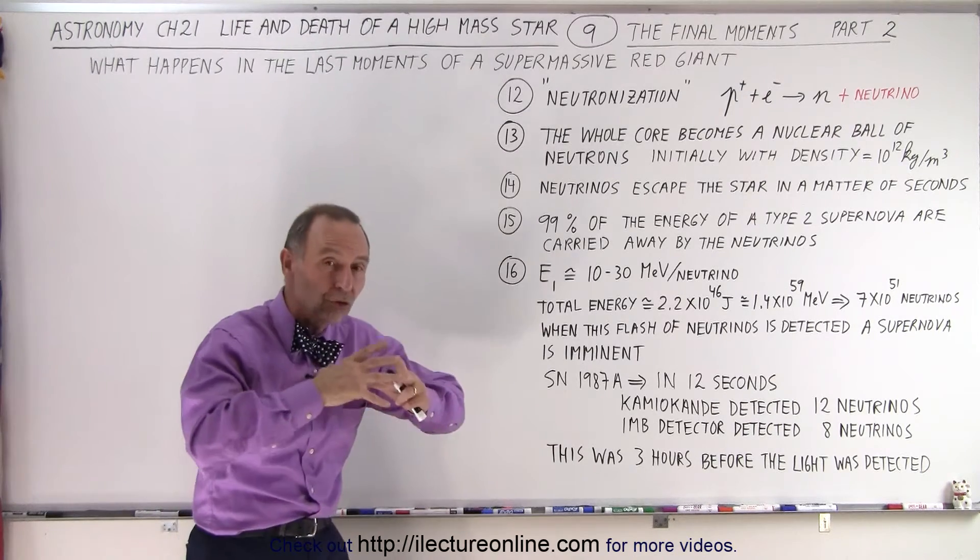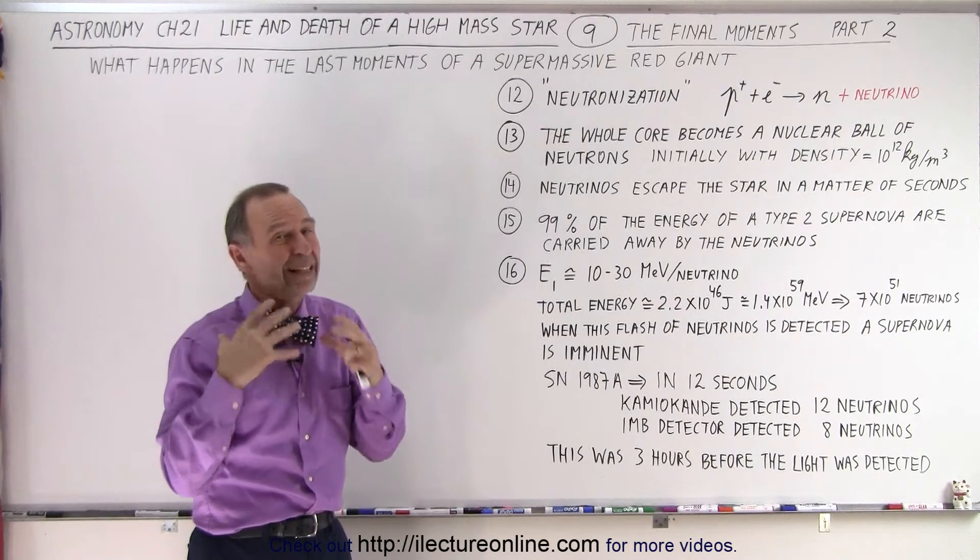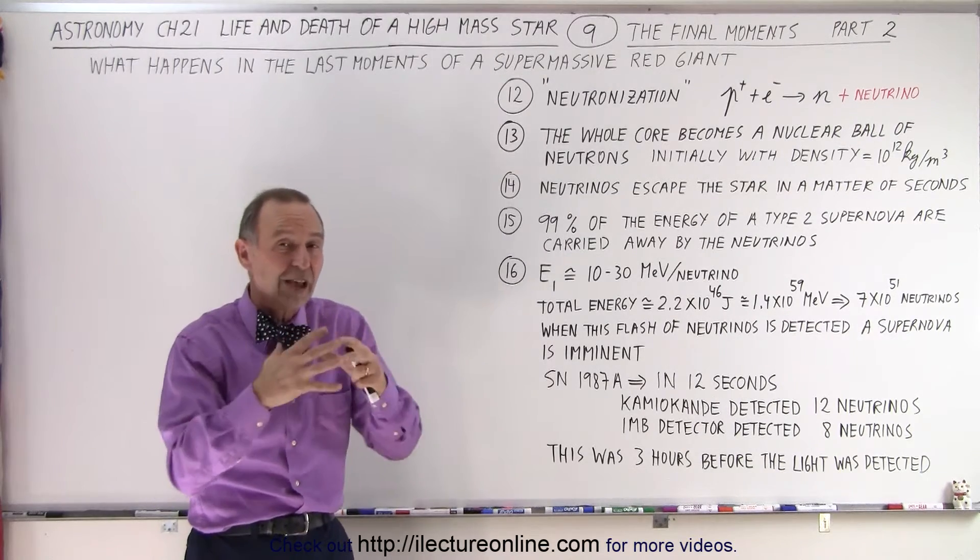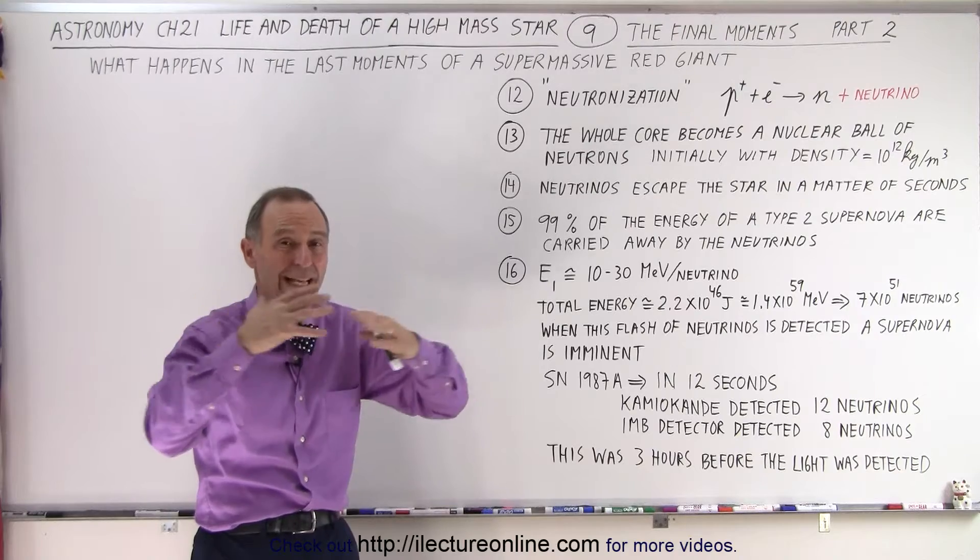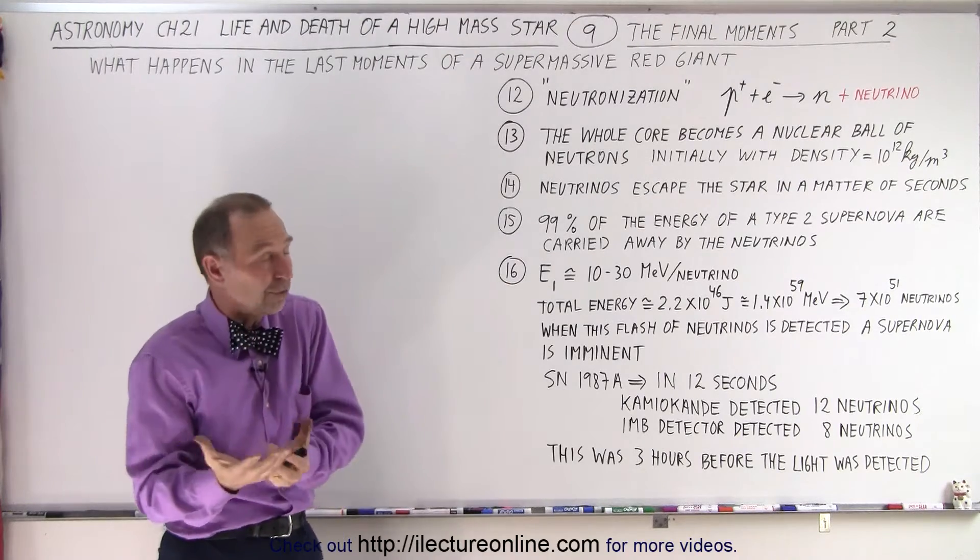So at this moment those neutrinos escape the core. Now the core is very dense, not all of them escape, but the vast majority escape out of the core in just a matter of seconds because they move at the speed of light.